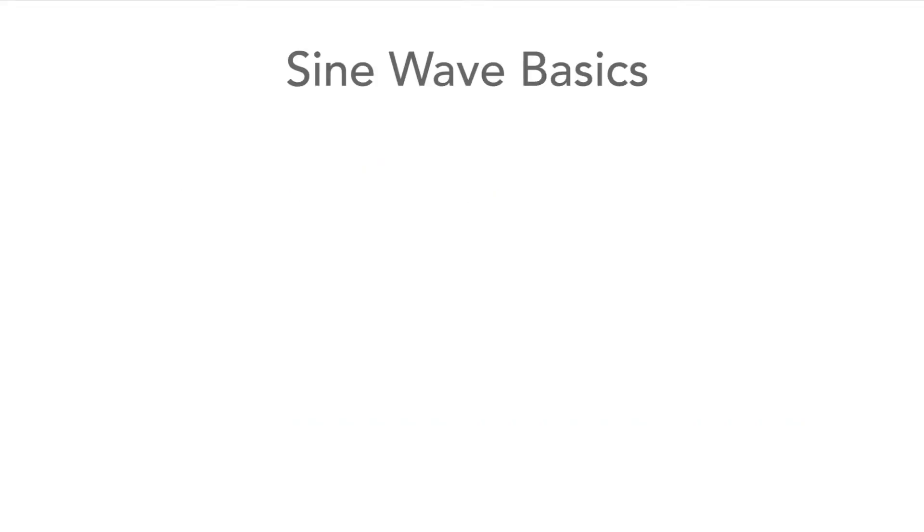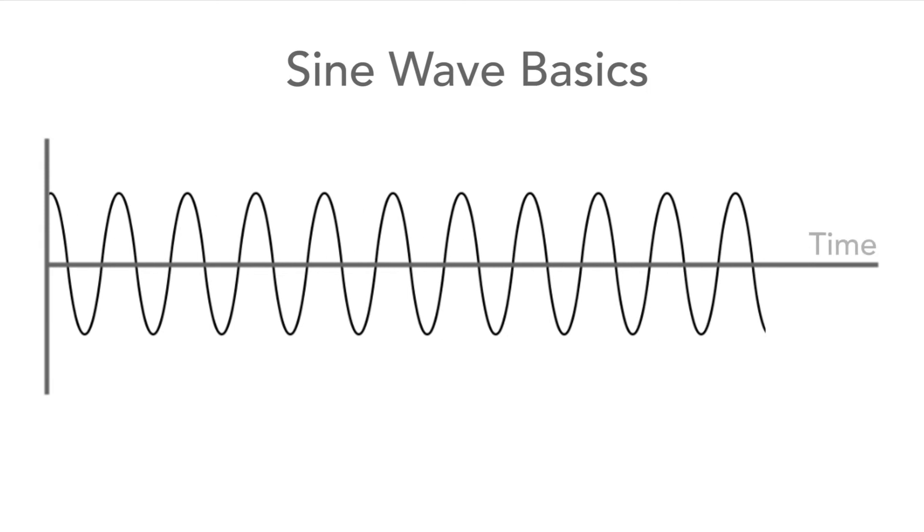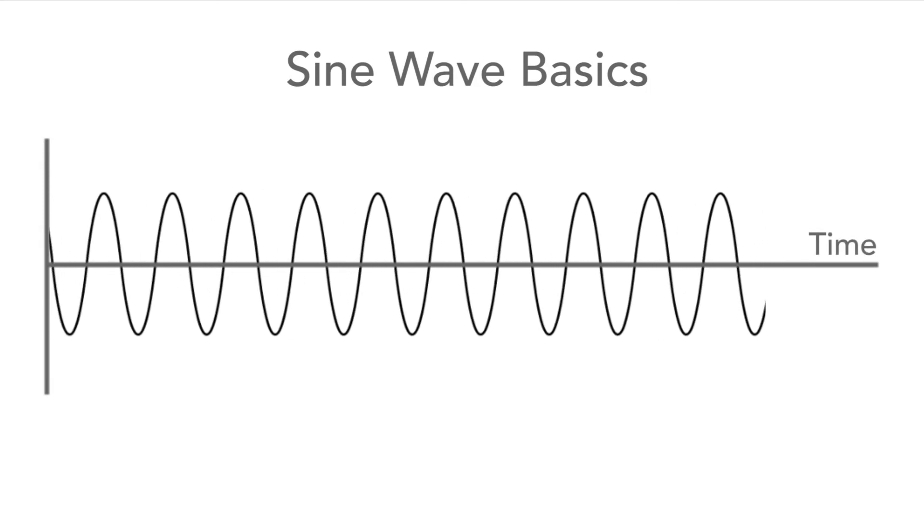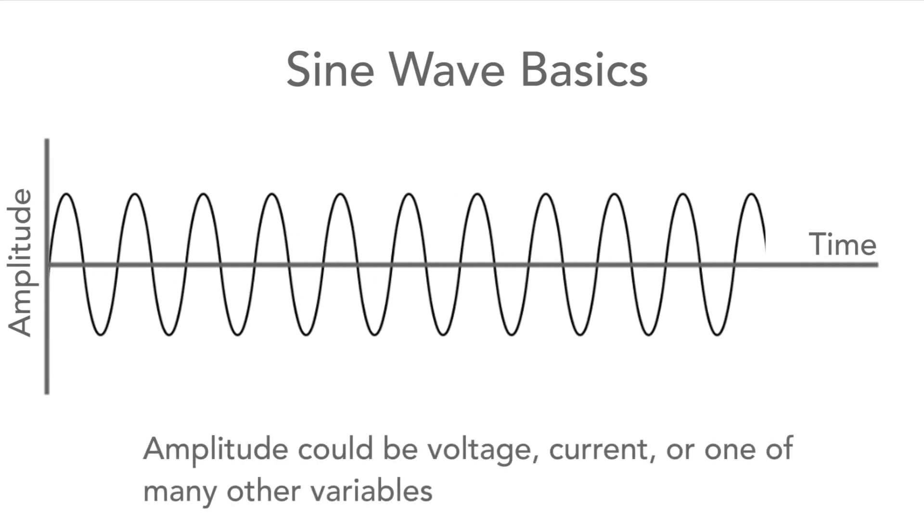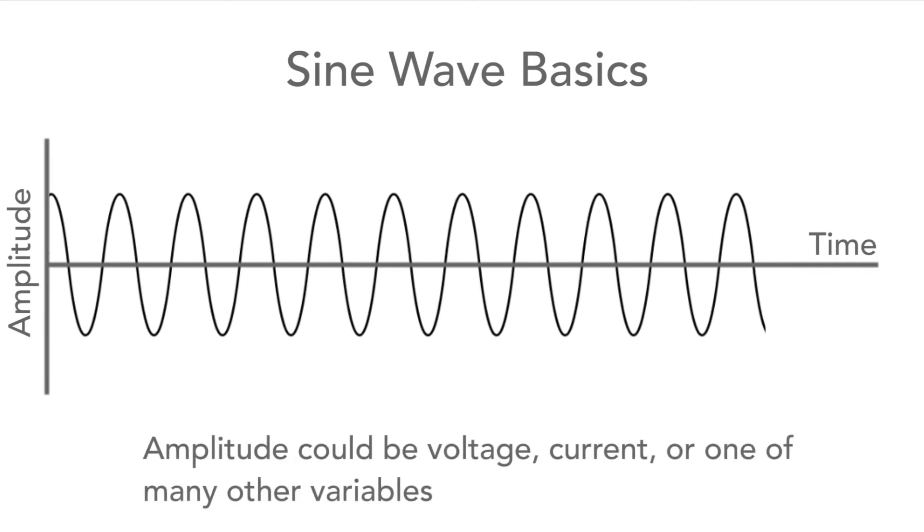Now let's look at some of the basics. The waveform varies over time. The actual parameter that's often seen in electronic circuits is voltage, but it can also be current or any one of a number of other variables.